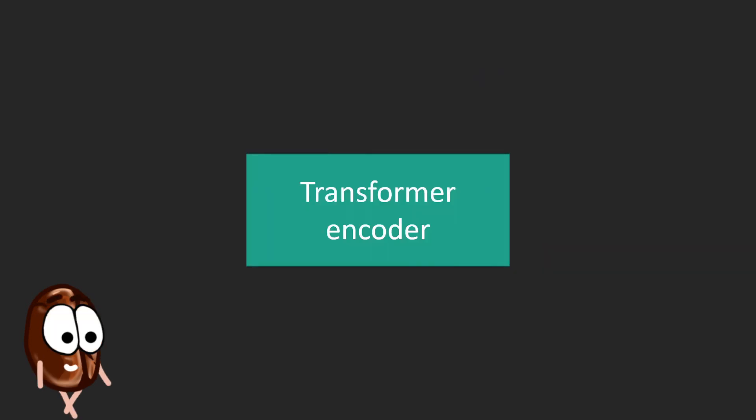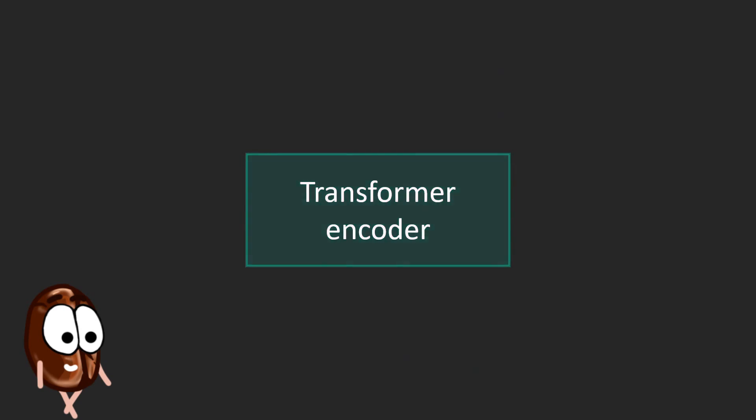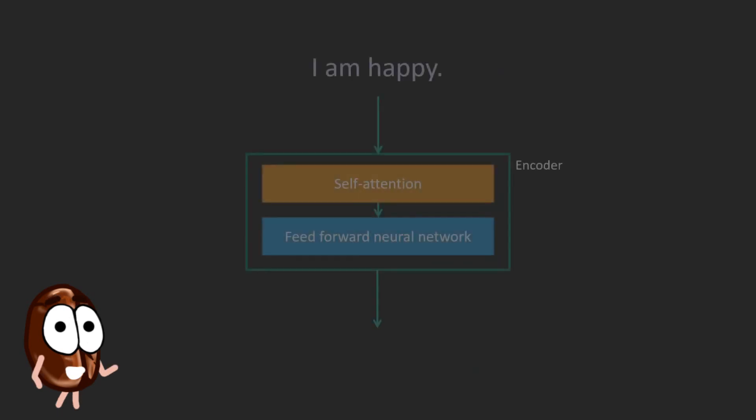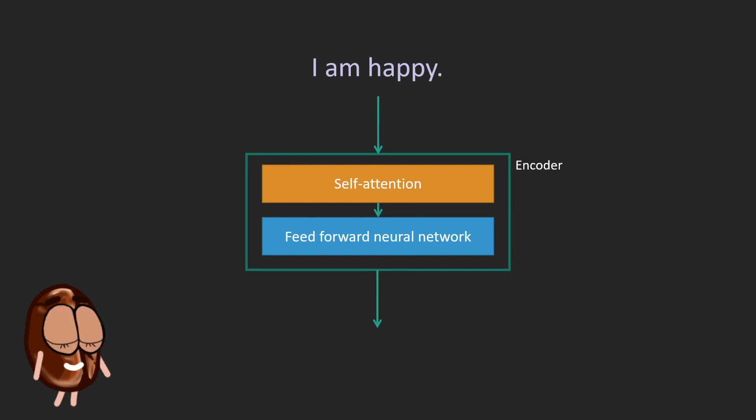Now let us dissect one of these Transformer encoder layers. All encoder layers are built of the same kind of blocks. The self-attention layer that processes the input and transmits it to a normal feed-forward neural network. We will explain self-attention shortly.